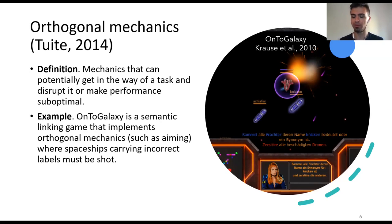In this example, OntoGalaxy by Krause and colleagues, you can see a game with a purpose for semantic linking, where users need to shoot spaceships whose label is not related to a given concept. In this way, the game is able to reconstruct an ontology.